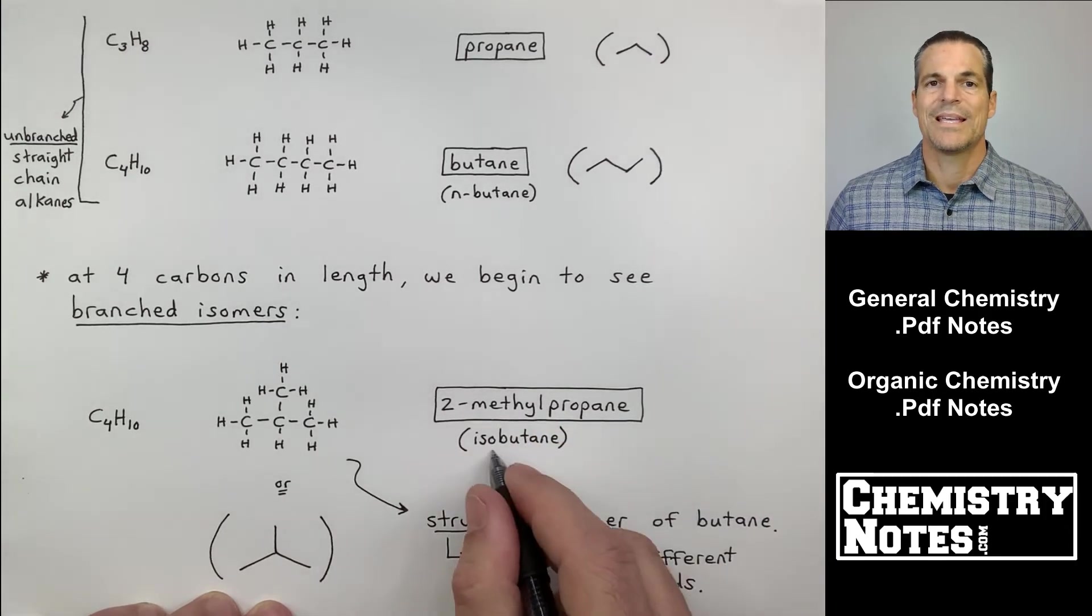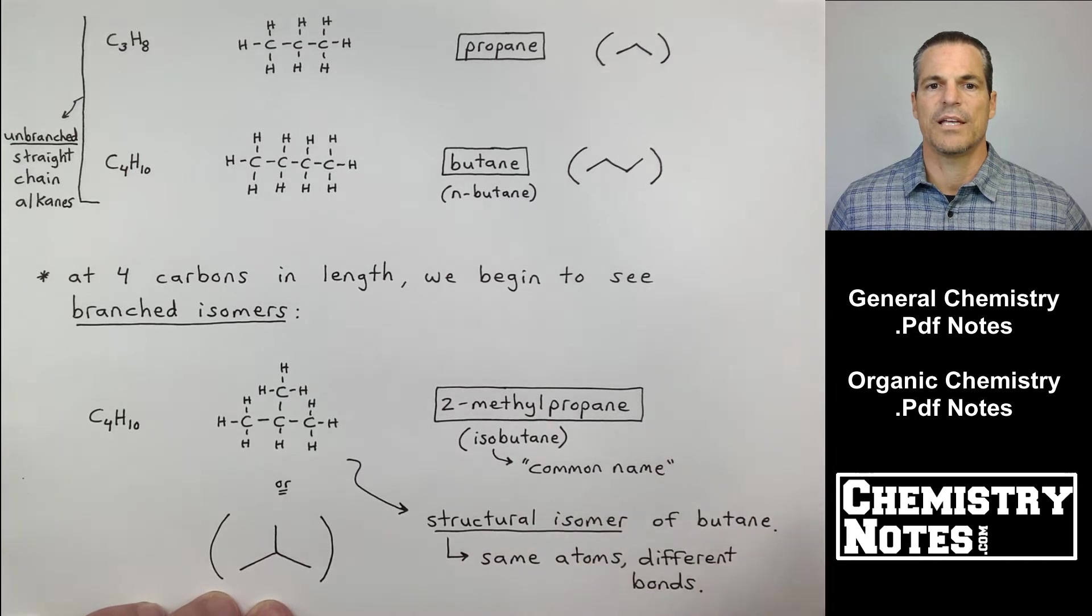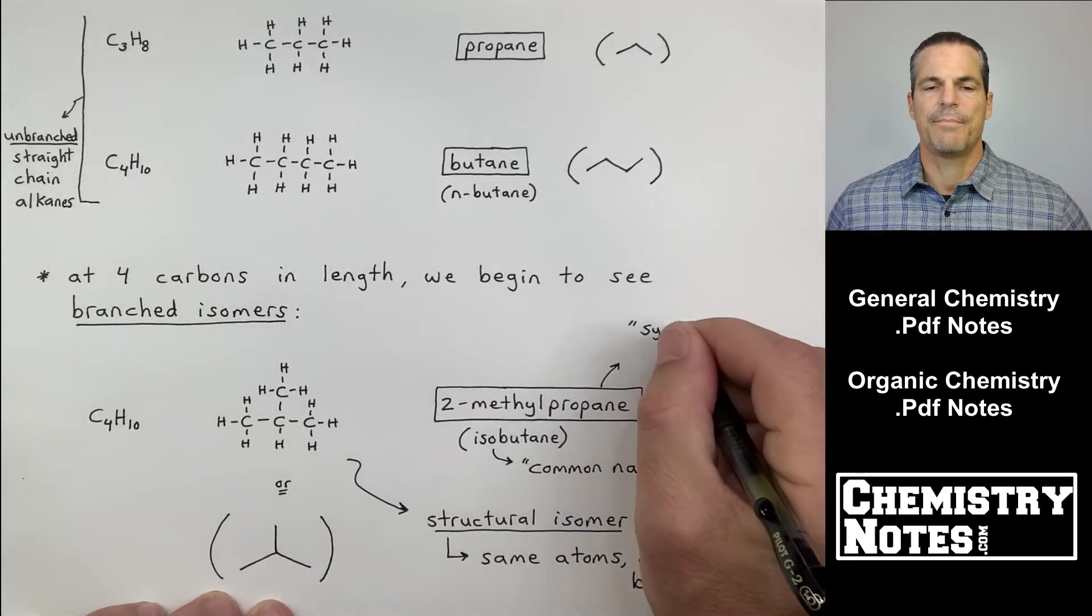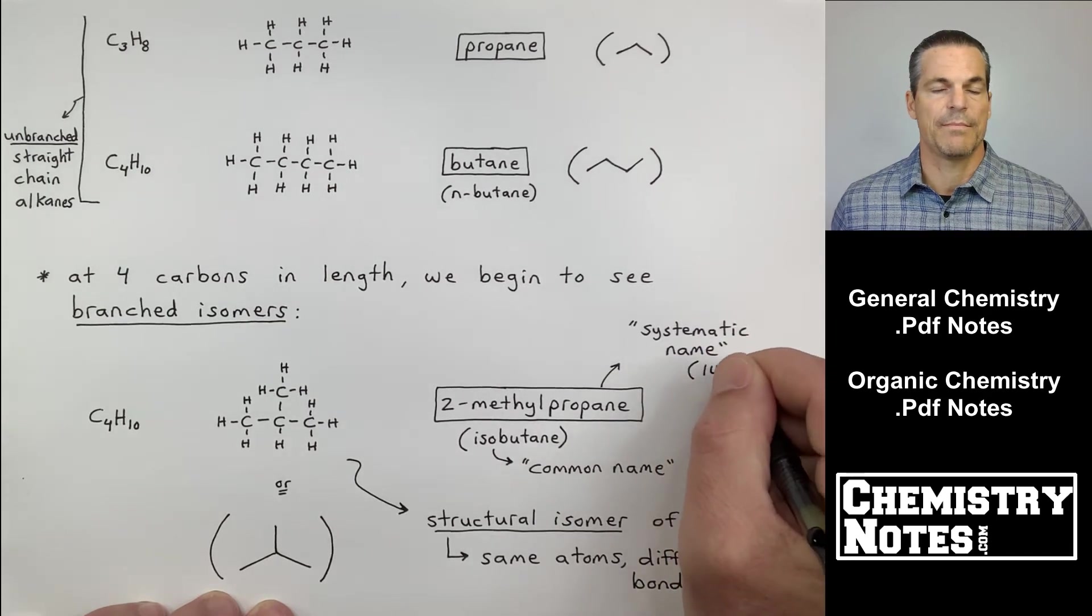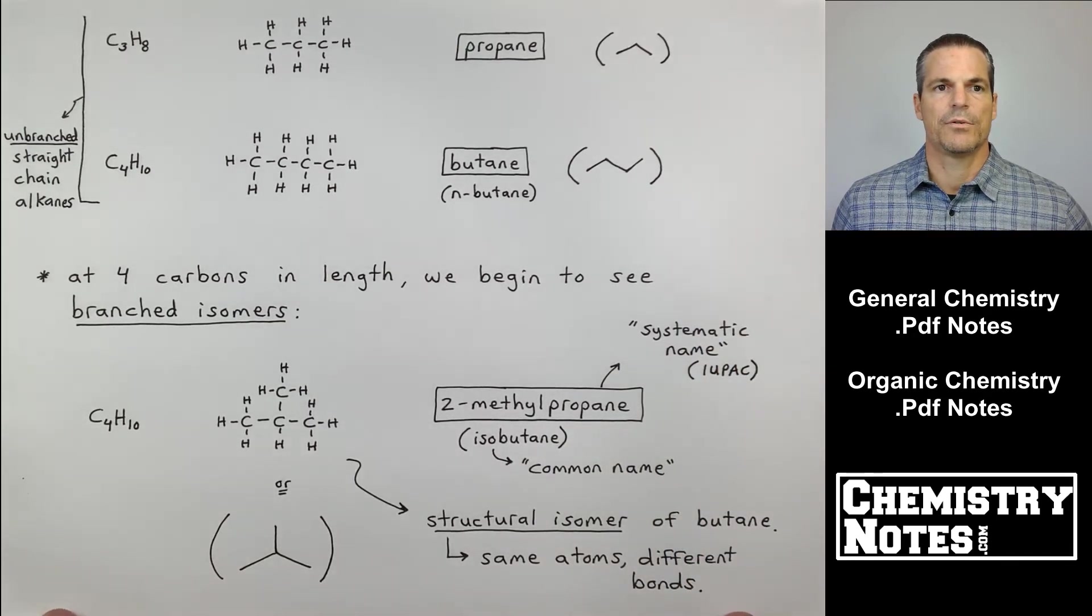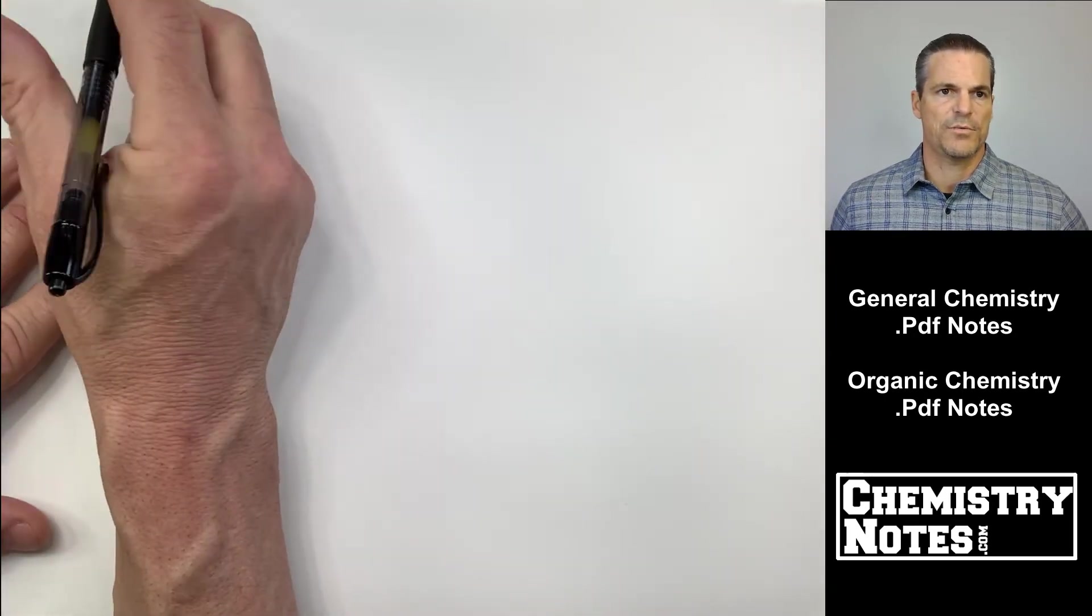2-methylpropane, by the way, has a pet name or common name - it's called isobutane. I put the box around the systematic name. This is how we will name stuff in video number two. Top of page three of today's notes, we're moving right along.